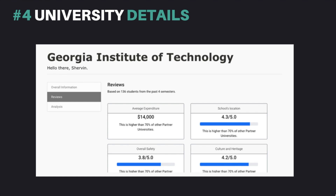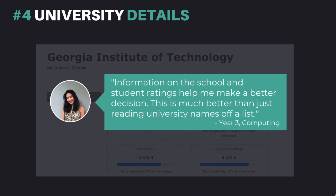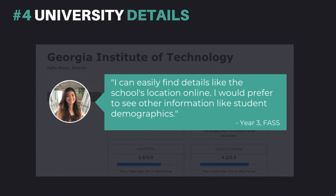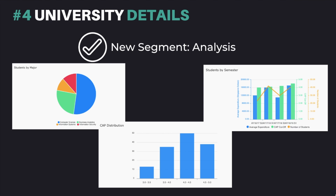Coming in fourth place, users' feedback indicated that university details addressed their problems of the lack of information on universities, as well as student reviews and ratings for each university. However, students stated that details such as university description and location can be easily found online, whereas demographic information, such as student distribution across majors and semesters, were more crucial. Thus, we added a new segment analysis which provides users with student reviews and demographics, such as the percentage of students from each major and their CAP distribution.